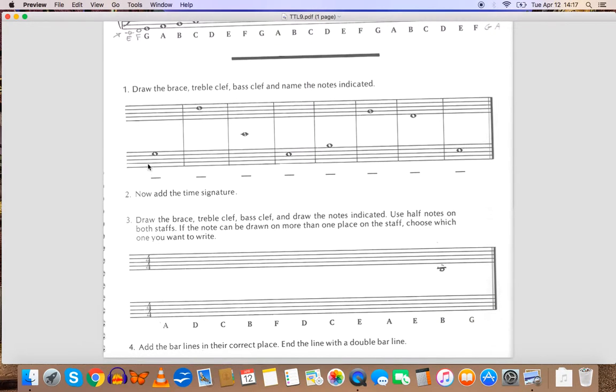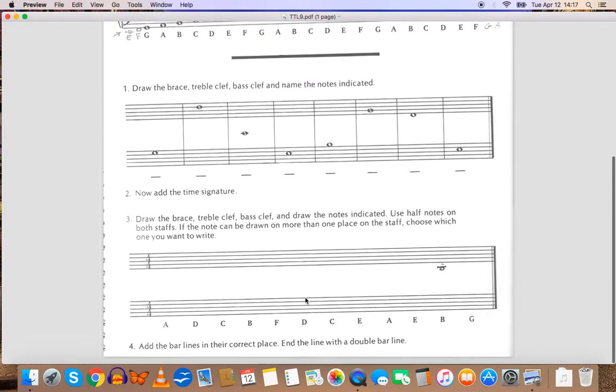Now, they want you to add the time signature to this activity up here. Number three, draw the brace, treble clef, bass clef, and draw the notes indicated. So here they give you the notes, and they want you to plot them on the lines on the staffs here. Use half notes on both staffs. If the note can be drawn on more than one place on the staff, choose which one you want to write. So all half notes, all the way through. If you forget what a half note looks like, please go back and review.